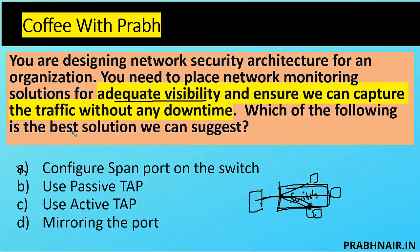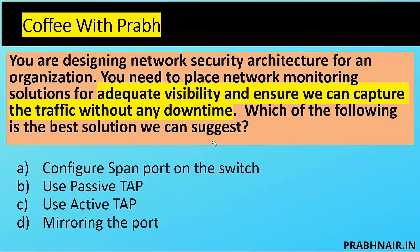Option B: use a passive tap — this is a separate dedicated device, and the best thing is it doesn't require power, so it can be a good option. Option C: use an active tap — active tap requires electricity to function. In both SPAN port and tap solutions, mirroring can happen, but in taps we have two types: passive tap doesn't require power, while active tap requires power. Considering downtime issues, I'll go with answer B — use a passive tap — because it doesn't require any power.